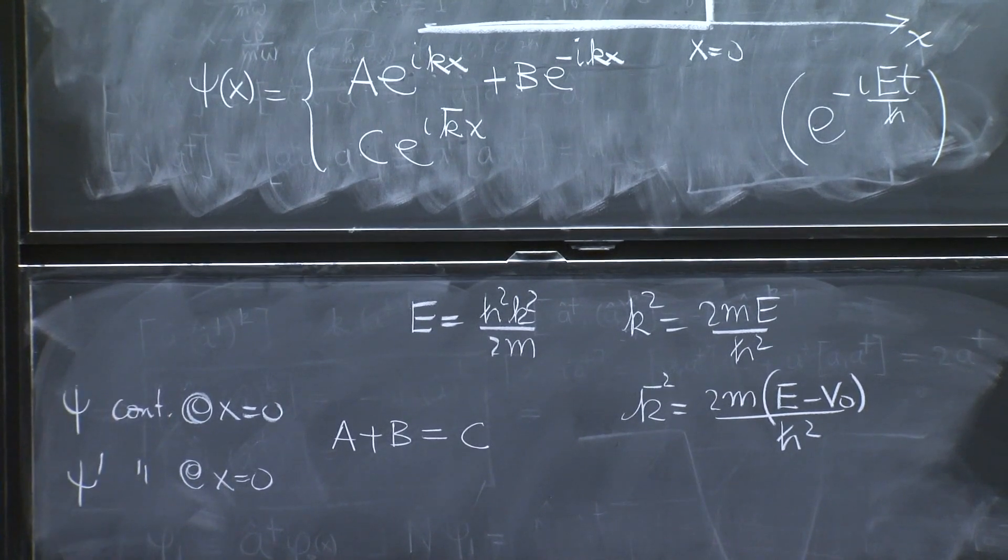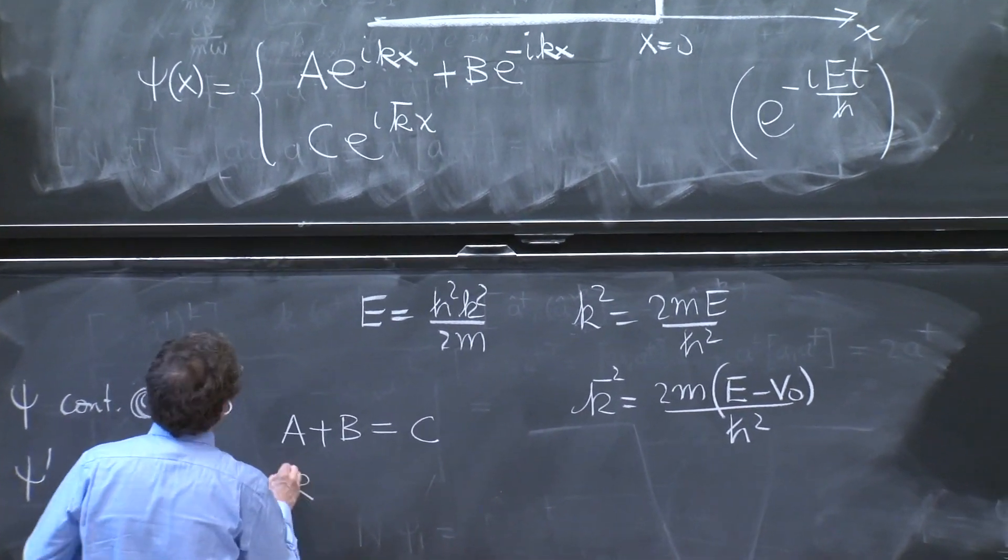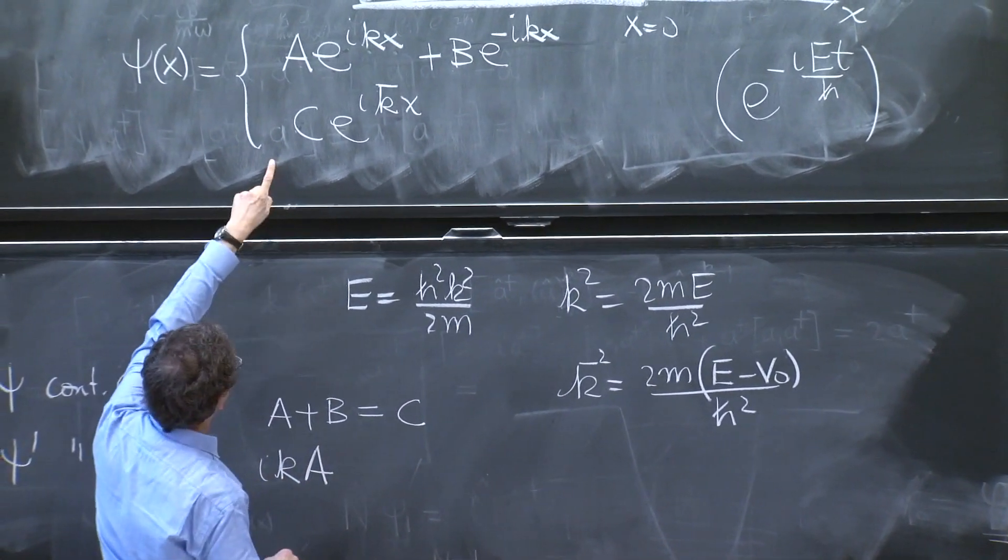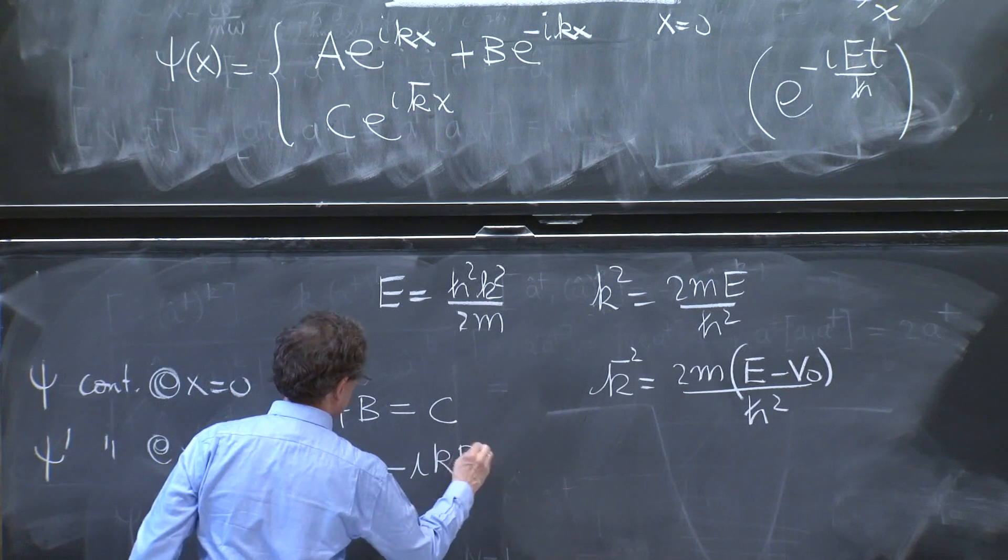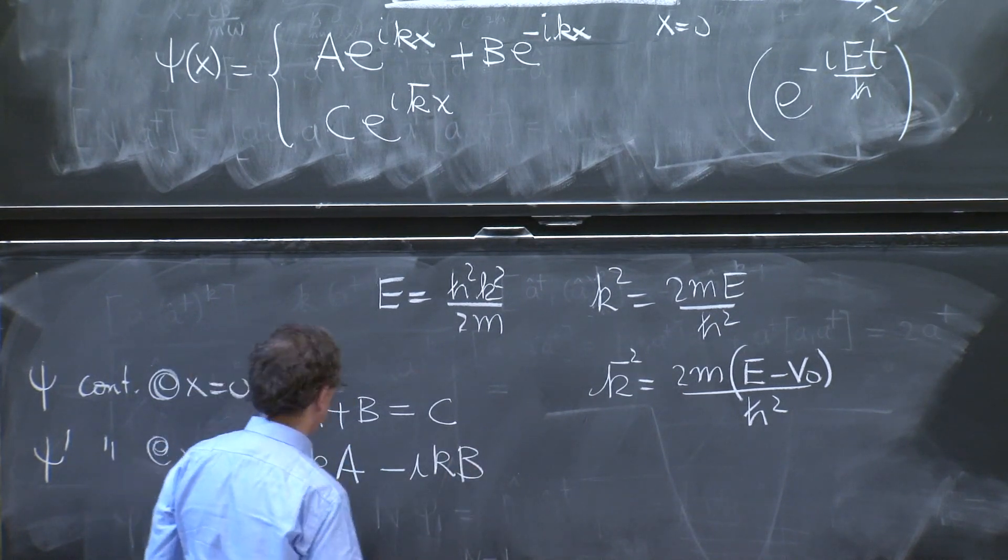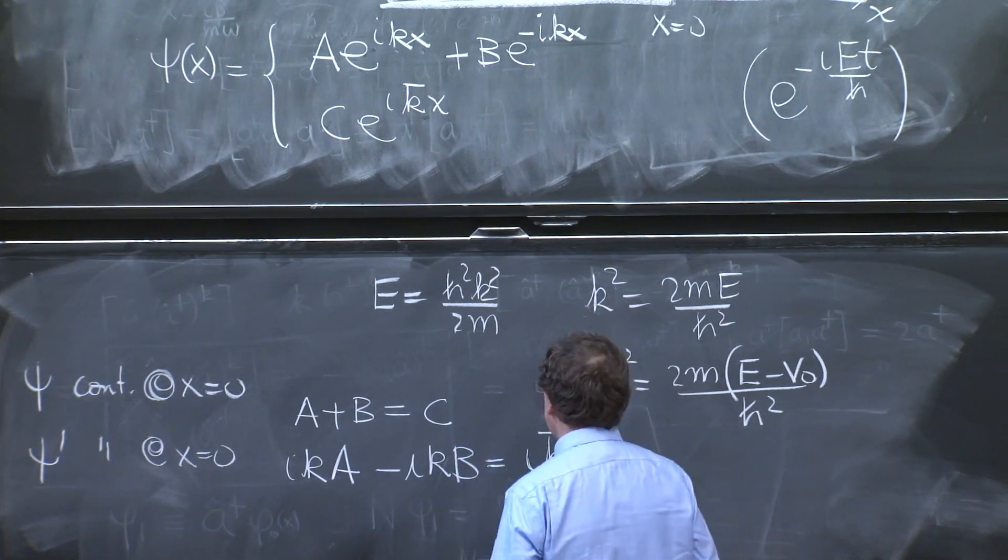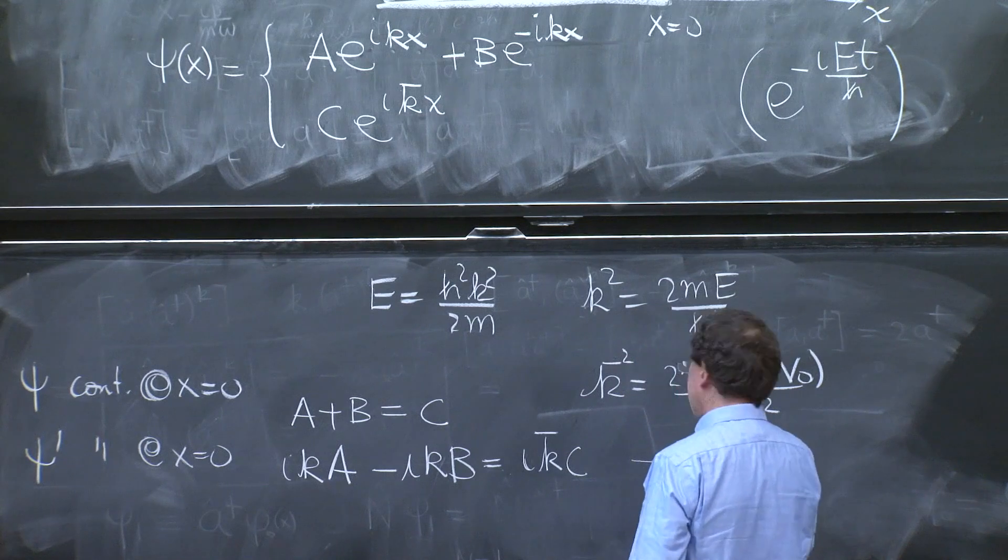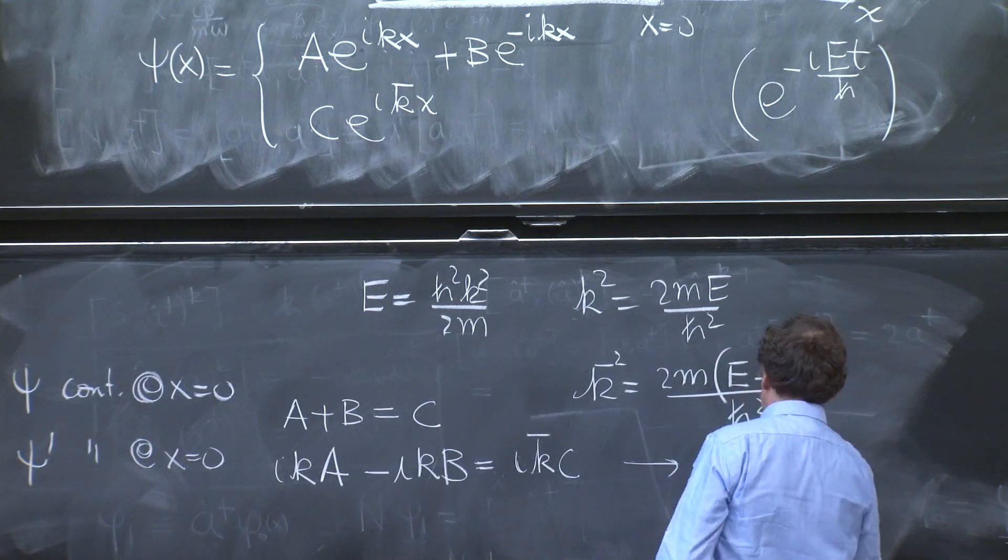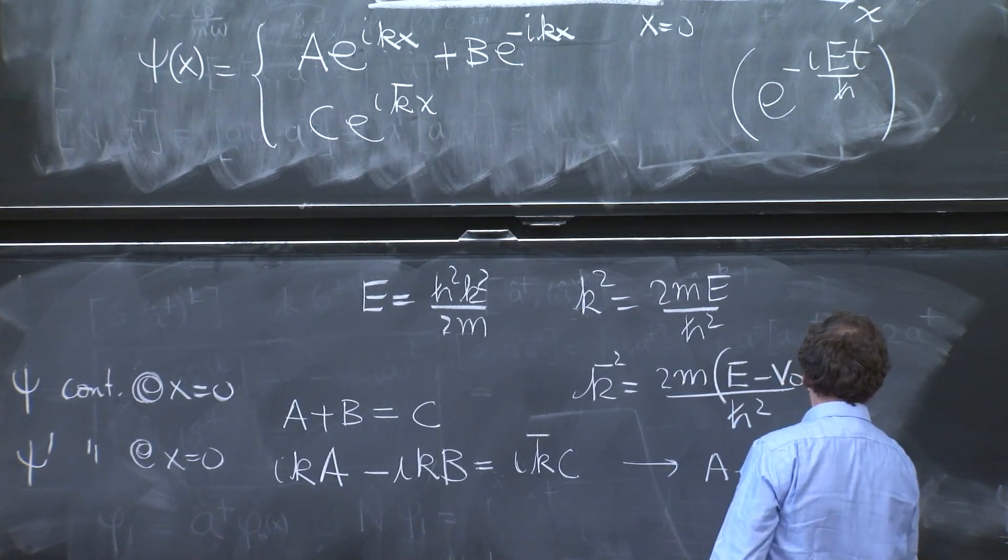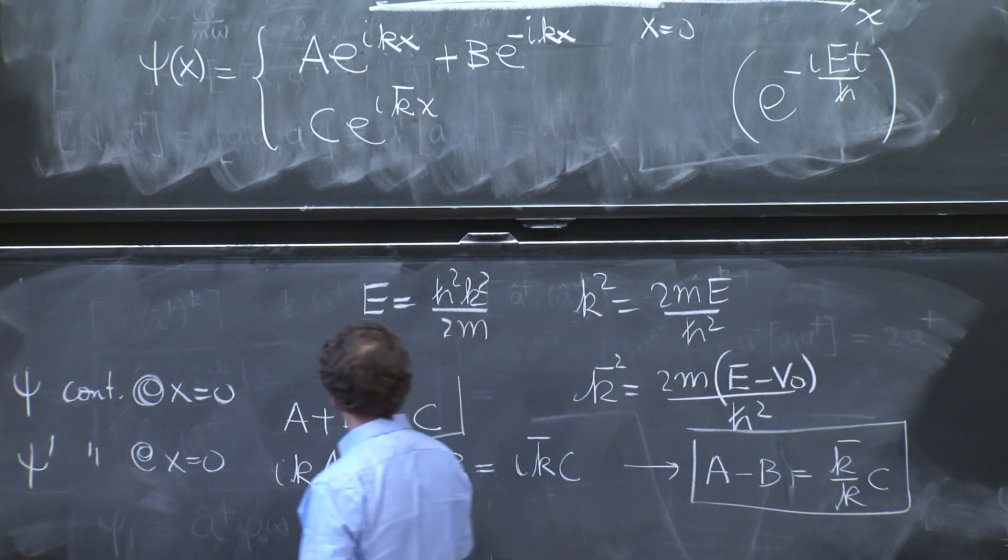And the derivative being continuous is because there's no delta function anywhere here. So you have i k a, that's the derivative of the first term, minus i k b, the same k in that region, of course, is equal to i k bar c. So from this, you get a minus b is equal to k bar over kc. So you get a minus b, two equations and two unknowns.